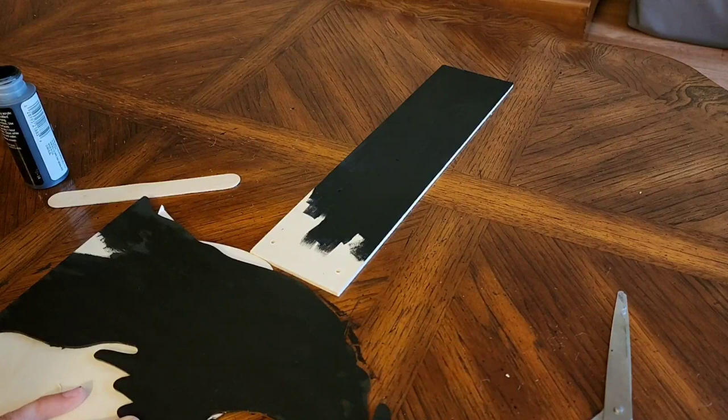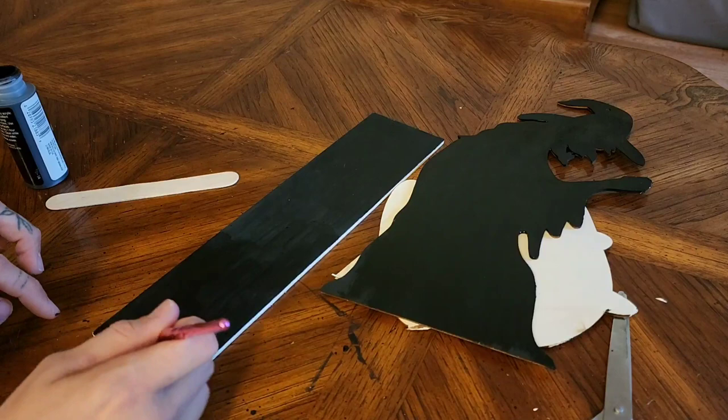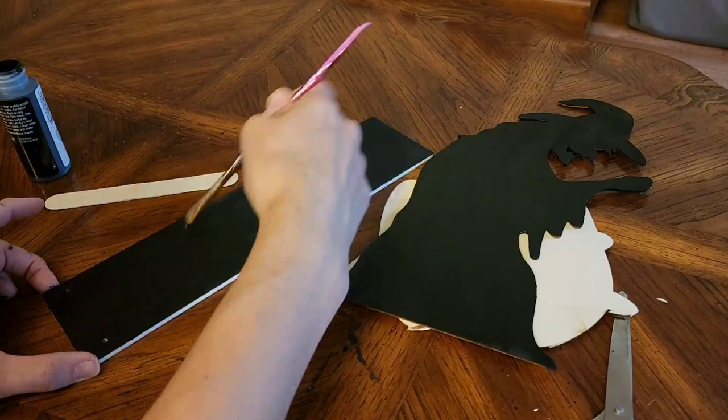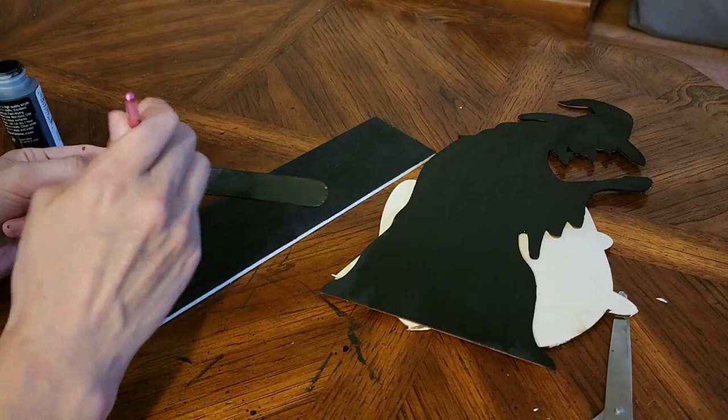However, you don't really have to paint the back side of the stand because no one's going to see it. But I have this weird thing where if I know it's there, it's going to bug me. Anyways, you're also going to want to make sure that you paint the sides of the stand and the witch and the popsicle stick.